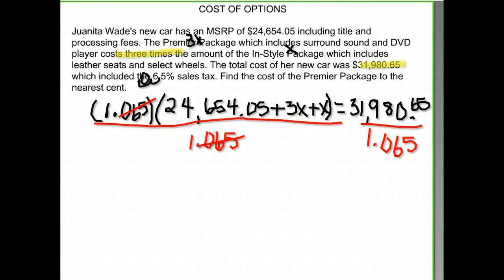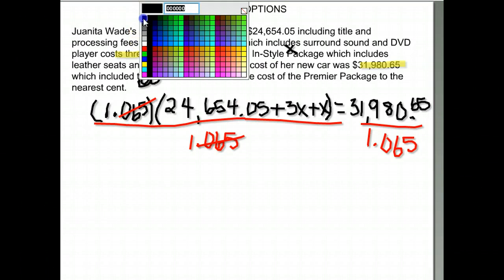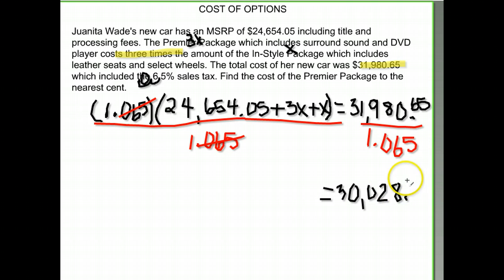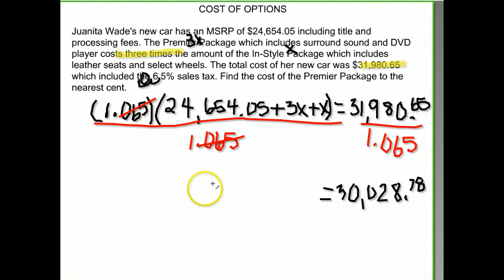On the right hand side, dividing gives me thirty thousand twenty eight dollars and seventy eight cents. On the left hand side, I simplify: three X plus X equals four X. So now I have twenty four thousand six hundred fifty four dollars and five cents plus four X.